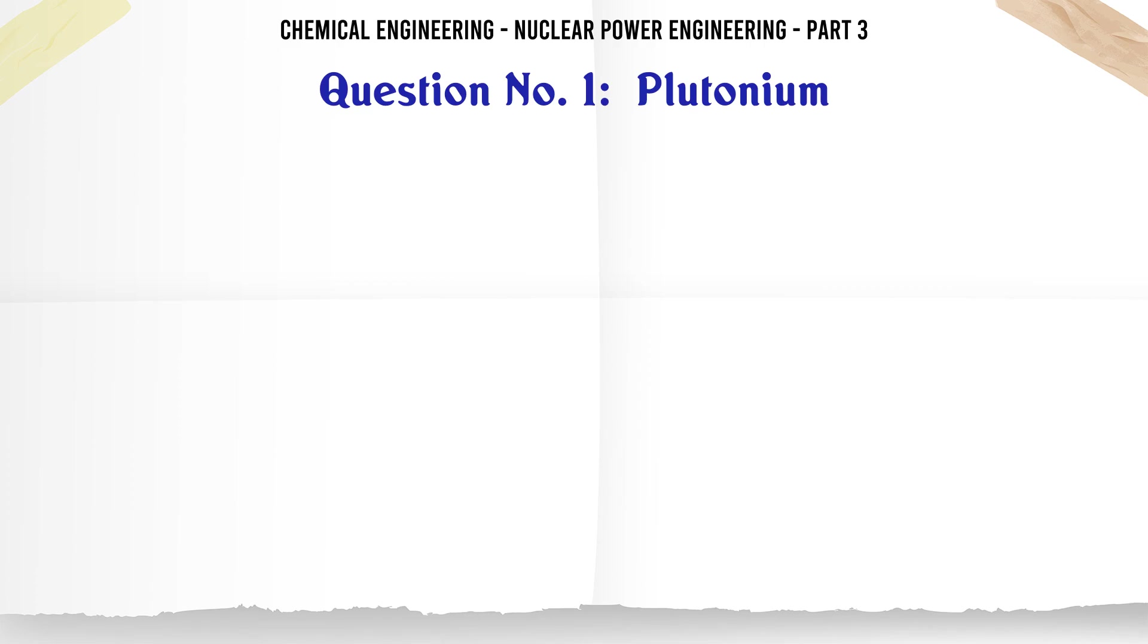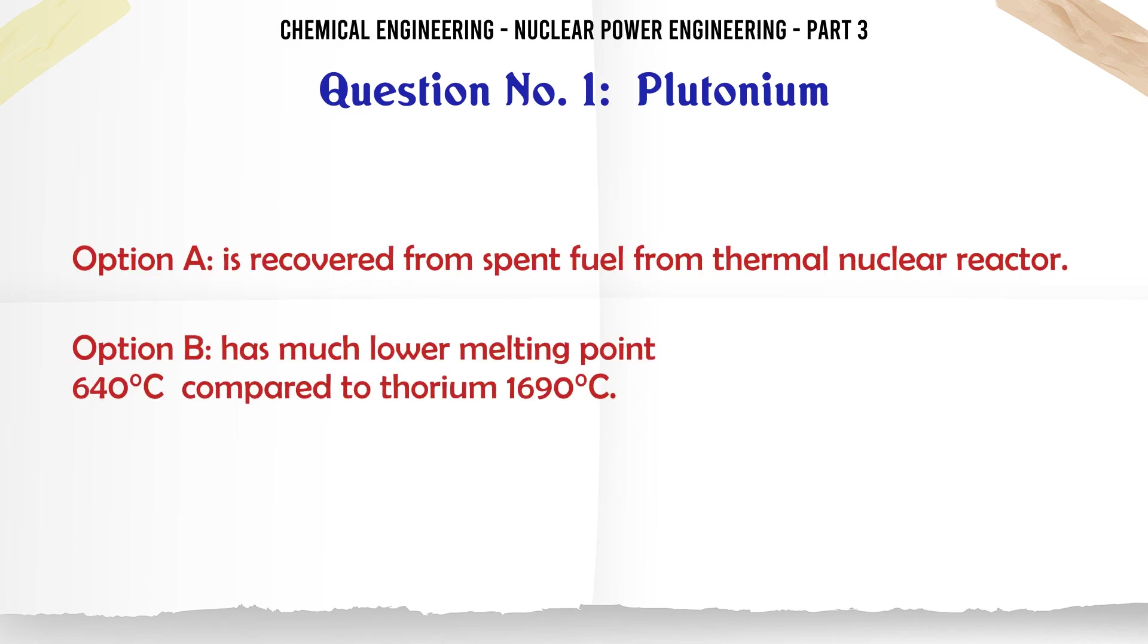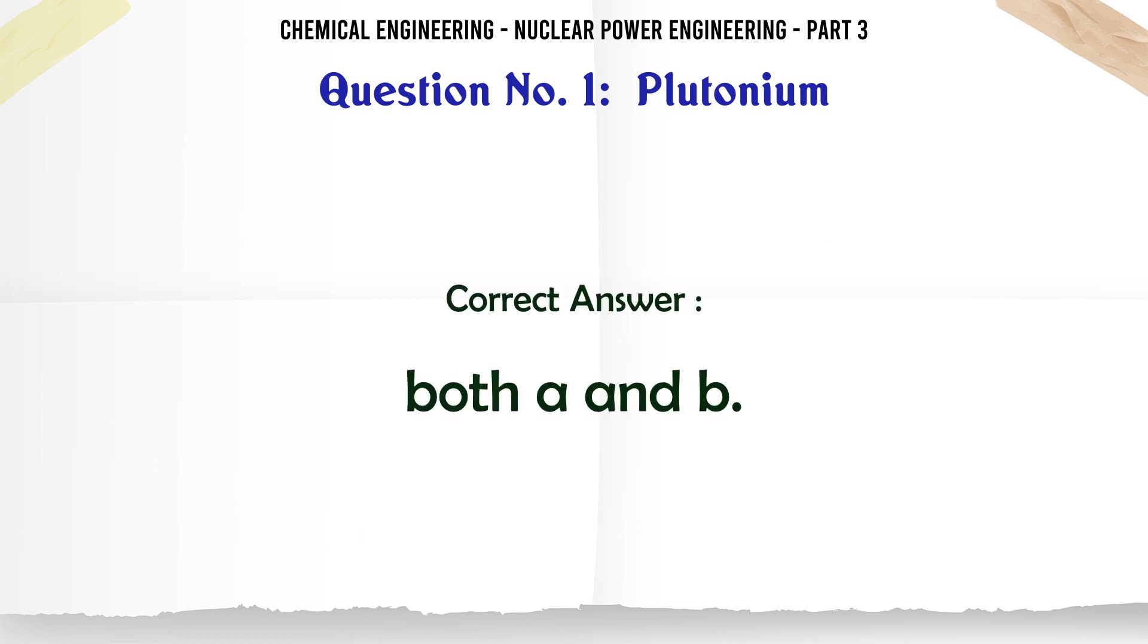Plutonium is recovered from spent fuel from thermal nuclear reactor and has much lower melting point 640°C compared to thorium 1690°C. The correct answer is both A and B.